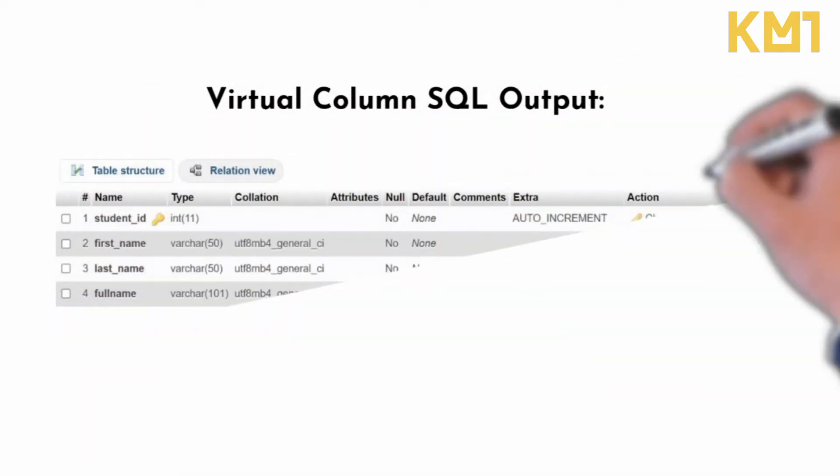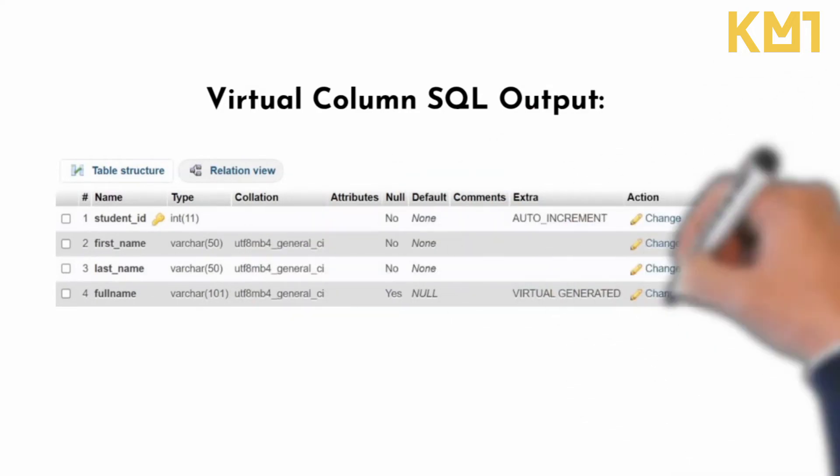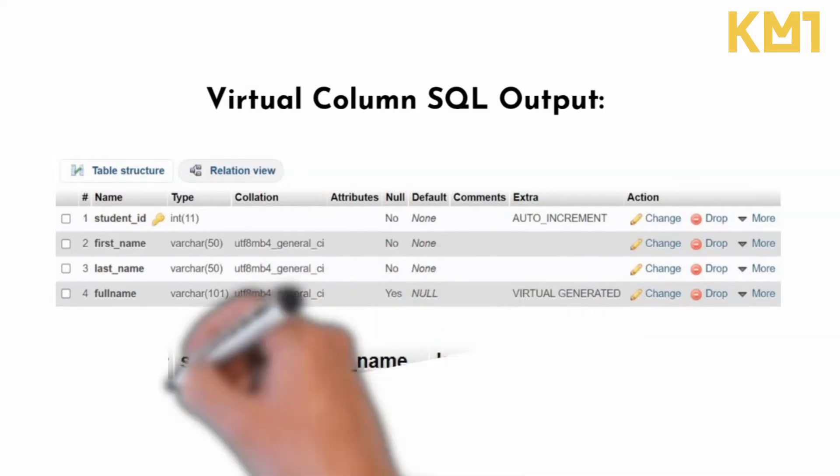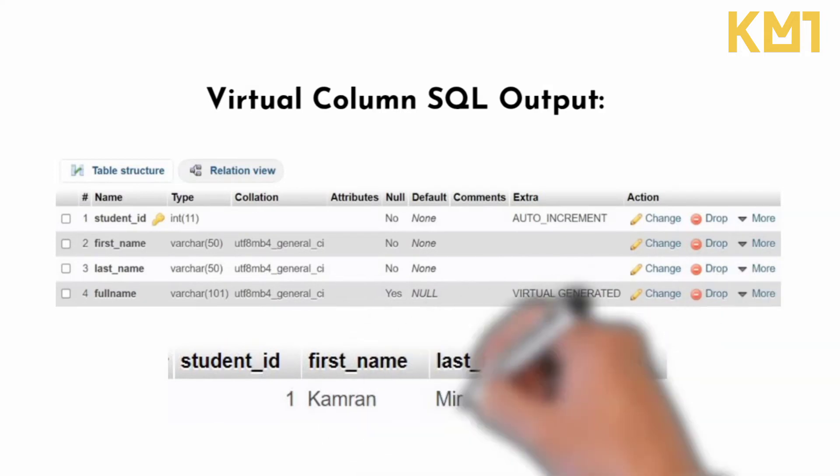In this figure, you can see there are three regular columns and the full_name is a virtual generated column. This column will automatically concatenate the first_name and last_name accordingly.